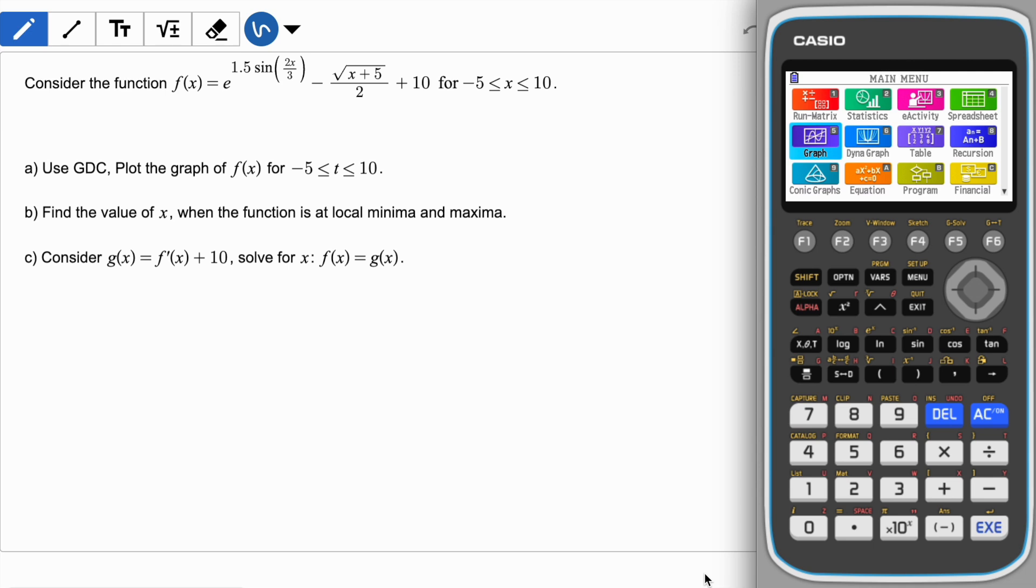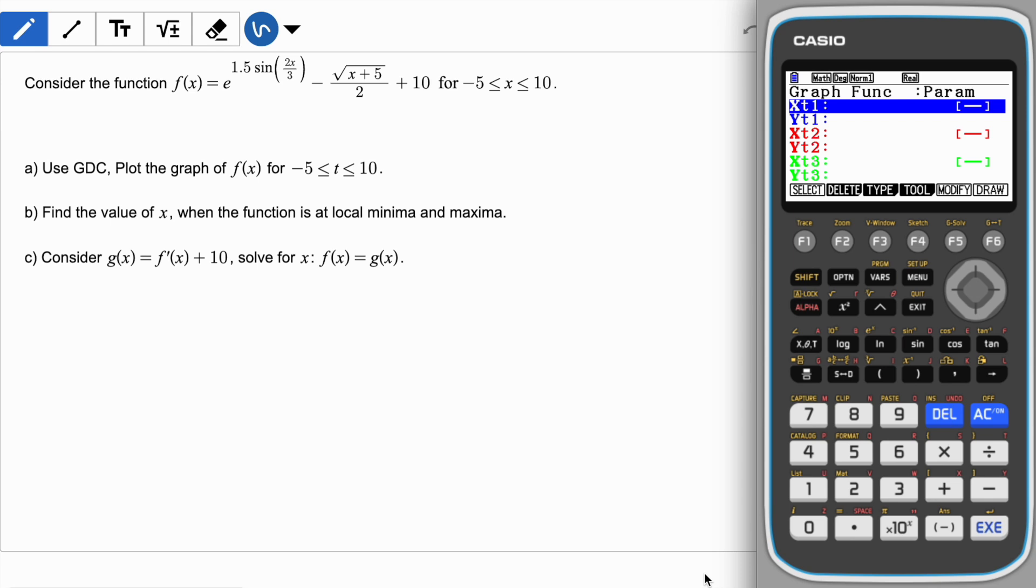If you see your GDC, turn it on and go to graph option. The very first setting which you should make sure is correct is on the F3 button. If you see right now my functions are xt1 yt1, if anytime this happens to you make sure you click on type. Click on F3 and come back to y because that's where you're going to deal with. It has to be like y1 y2 y3 etc. and if you have other functions entered, delete them first.